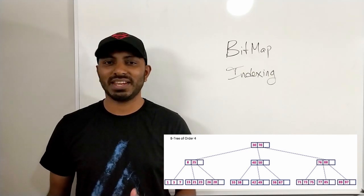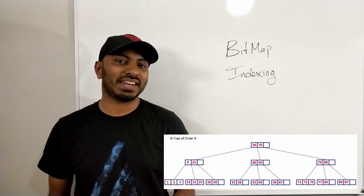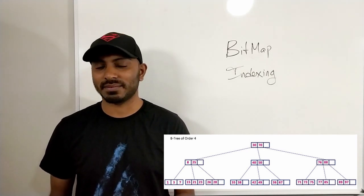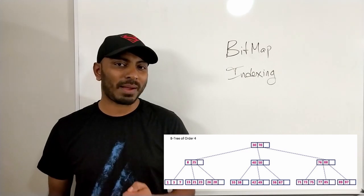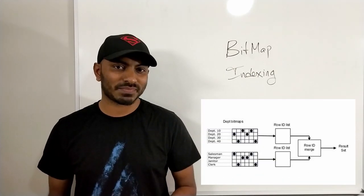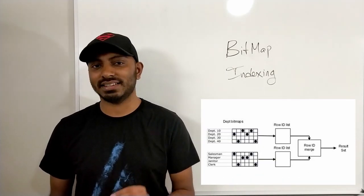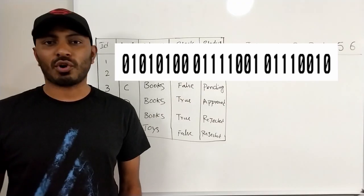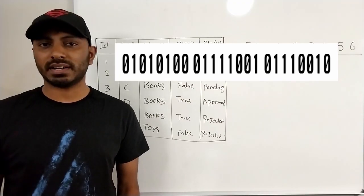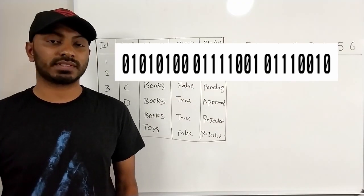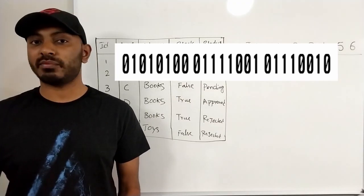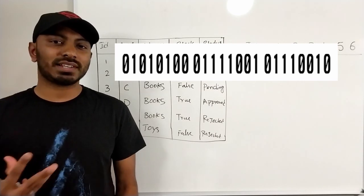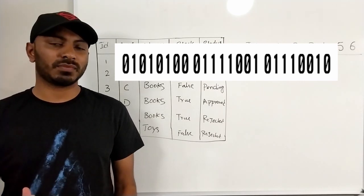You probably know about B-tree, B+ tree, and AVL tree data structures used in database indexing. But do you know about bitmap indexing? In this video we're going to learn exactly that. A bitmap, also called a bit array, is a data structure that uses a sequence of bits to store information. They usually consume a lot less memory.